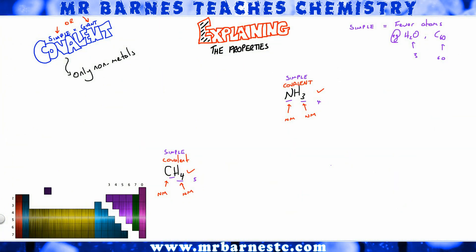Now I know how to work out whether I've got simple covalent or not, I need to remember the properties. Nice and simply, anything that's simple covalent will have a low melting point — it's the only type of bonding that has a low melting point. Also, all covalent compounds do not conduct electricity, though there are a few exceptions — but not for simple covalent.